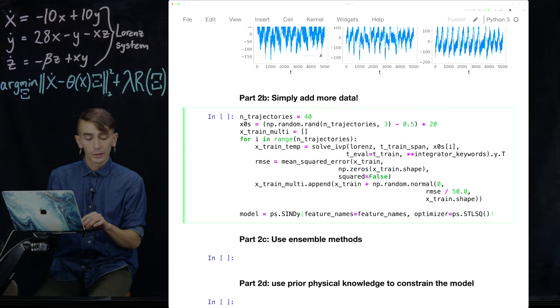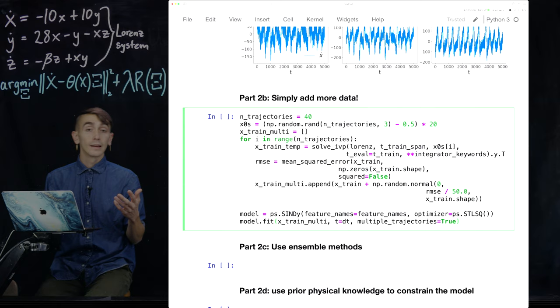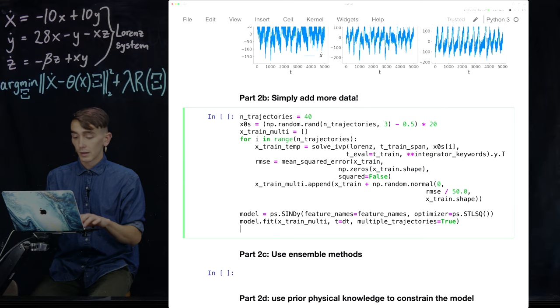And then we just fit the data past the time step. And then the last thing you need to do is multiple_trajectories is true. And this is just a flag that basically you're fitting multiple Lorenz training trajectories. And so it sort of figures that out and it allows you to use the functionality. And then we just print the model.